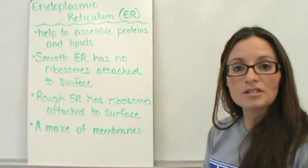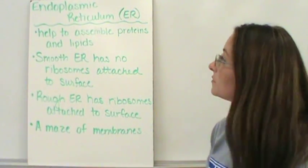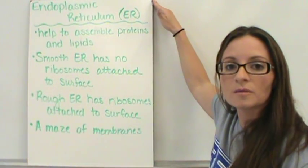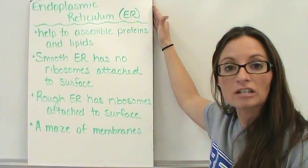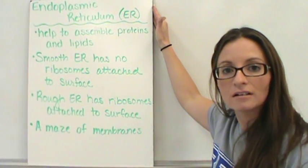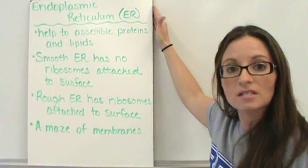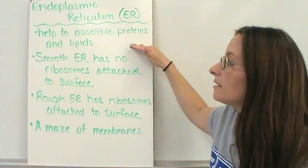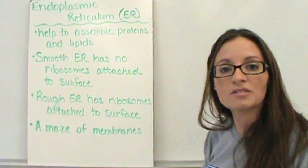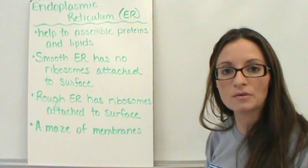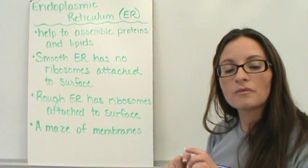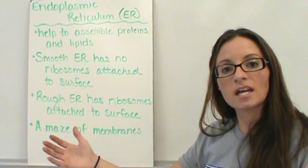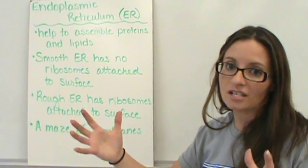The second structure is our endoplasmic reticulum. Now the endoplasmic reticulum a lot of times is abbreviated ER. So I may refer to it as the ER, and that is what I am talking about is the endoplasmic reticulum. Now, the endoplasmic reticulum actually helps to assemble the proteins. The ribosome takes them and puts them into chains, but the protein is not finished at this point.